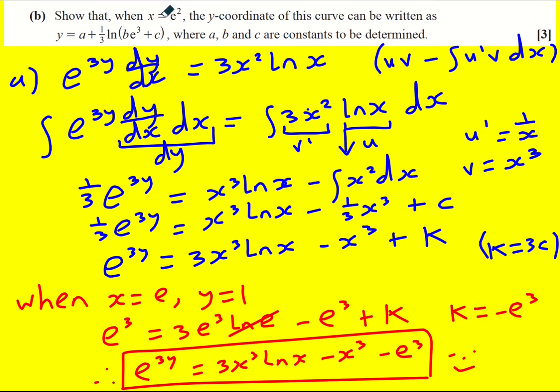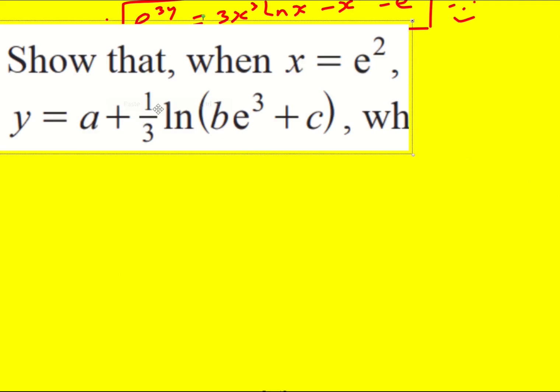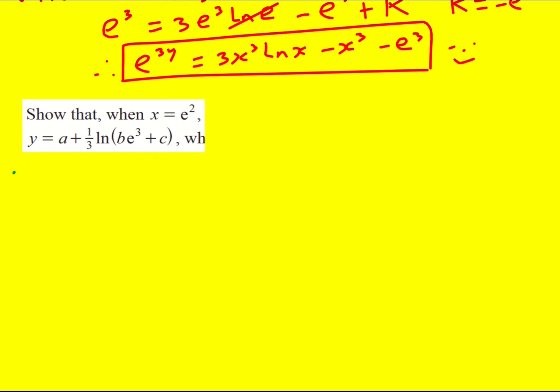Now we're asked to show that when x equals e squared we can write y in a particular form. It's going to test us presumably on combining logs. When x equals e squared we're going to get e to the 3y equals 3 times e squared to the power of 3 ln e squared minus e squared to the power of 3 minus e cubed.